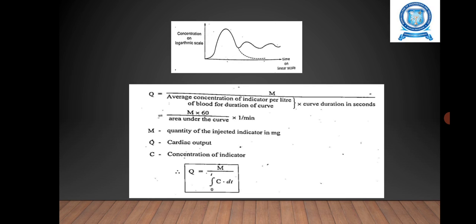For calculating the cardiac output from the dilution curve, you have the formula Q = M / (average concentration of indicator per liter of blood for duration of curve × curve duration in seconds). That is equal to M × 60 / (area under the curve) in liters per minute.